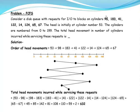We process 98, then 183, then 41, then 122, then 14, then 124, then 65, and then 67. Since it is an FCFS algorithm, requests are processed in the order they arrive in the disk queue. Starting from the disk head at 53, we move to cylinder 98, then to 183, then to 41, and so on up to 67.